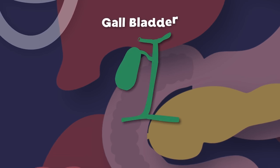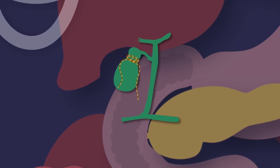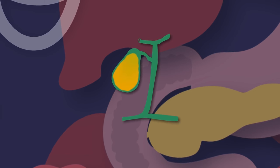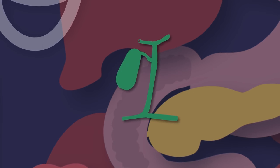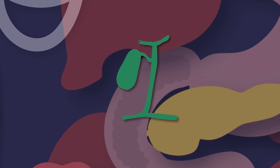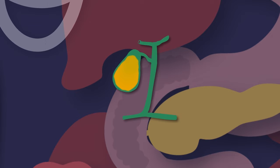I am your gallbladder. I am a sac-shaped organ, you see. I am a gallbladder. Your liver stores its bile in me. I am your gallbladder. I am a sac-shaped organ, you see. I am a gallbladder. Your liver stores its bile in me.